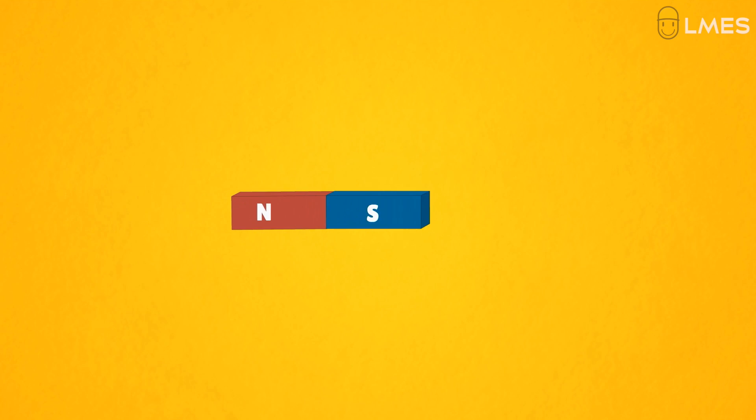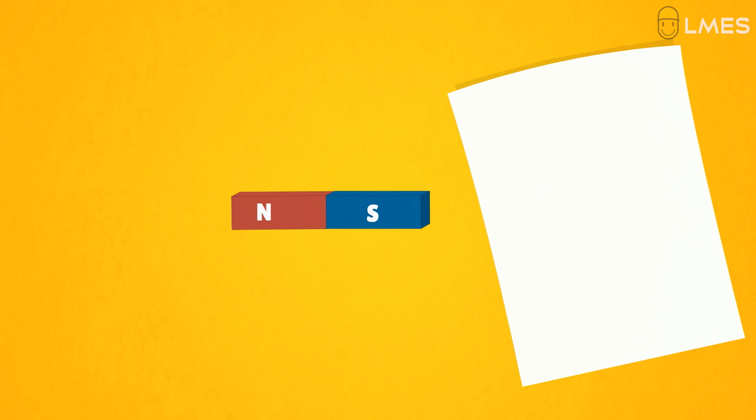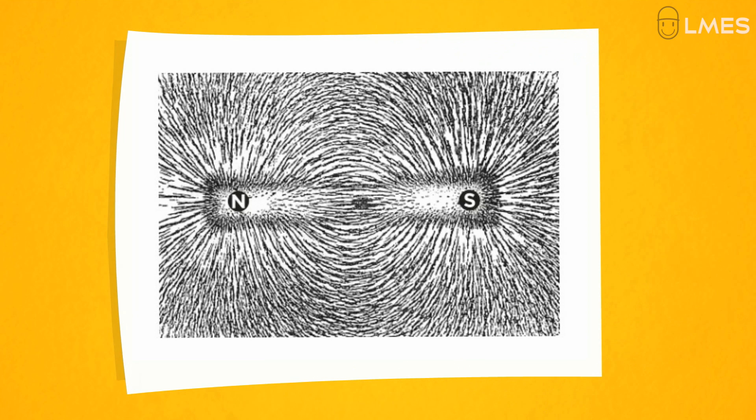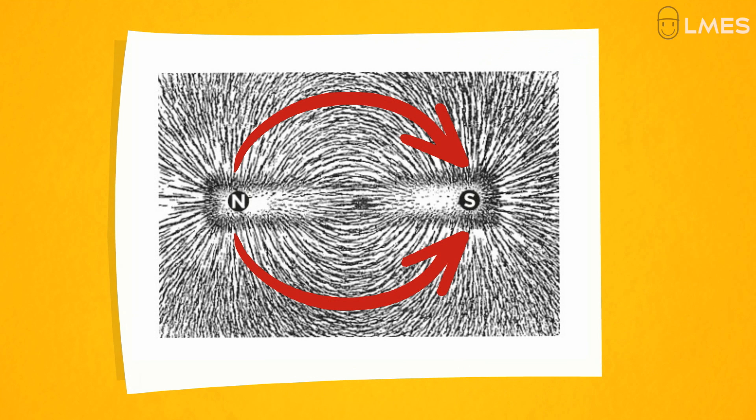The next step is to learn a small experiment. We are going to study a small experiment, taking a paper. We are going to study magnetic field lines. We have all the mountains and we know that we are very happy. Let's study school time in this video.